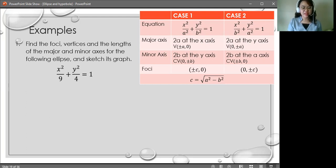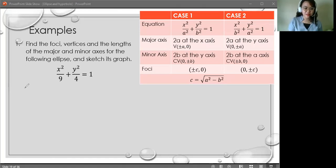Our given is x squared over 9 plus y squared over 4 equals 1. First step is to identify whether we are given a case 1 or a case 2 ellipse. Let's begin with identifying the case.